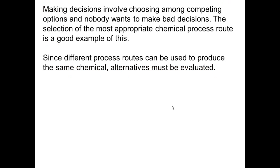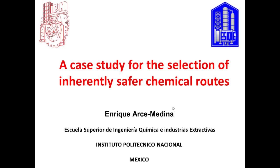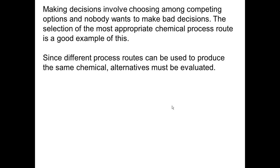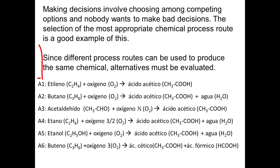Making decisions involves choosing among competing options, and nobody wants to make bad decisions. The selection of the most appropriate chemical process route is a good example of this. Since different process routes can be used to produce the same chemical, in this case acetic acid, these different chemical routes must be evaluated.